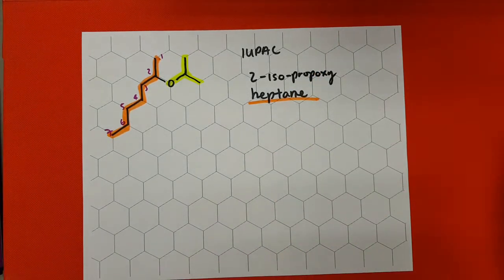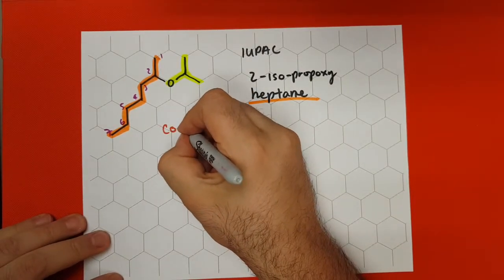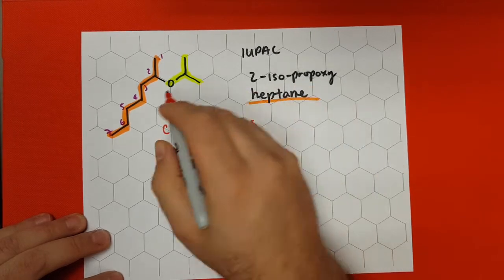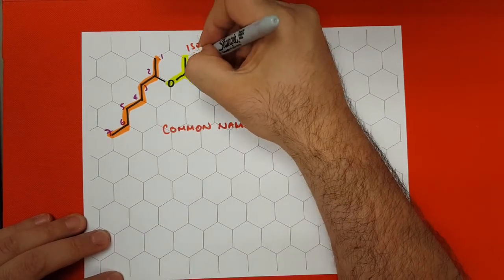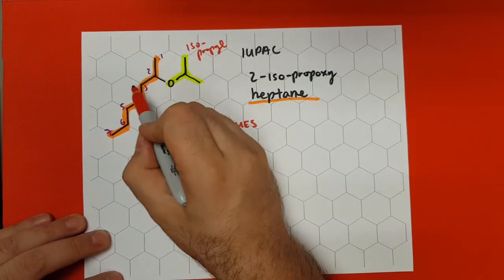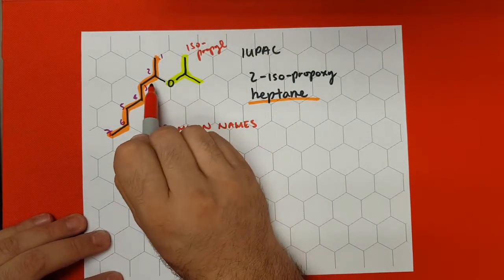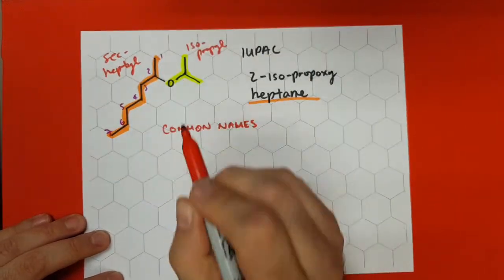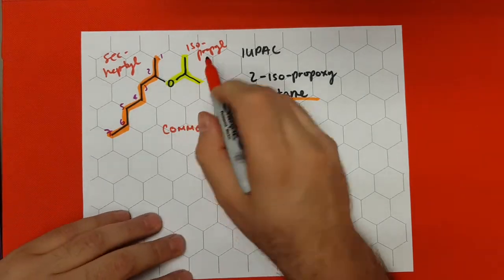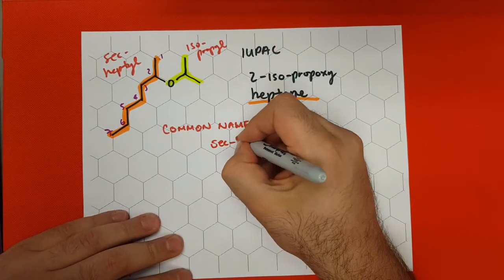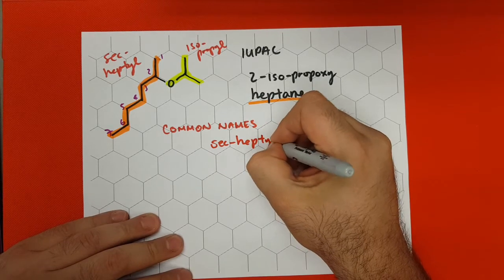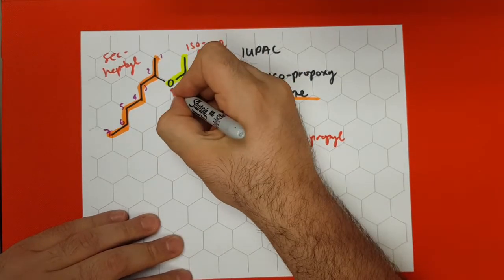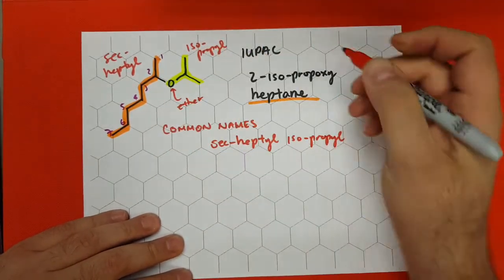Now, in the case that we're doing common nomenclature, remember, we have to identify what's on the left and on the right side of the oxygen atom. So here we have isopropyl. And on the other side, we have 1, 2, 3, 4, 5, 6, 7 attached to the secondary carbon — sec-heptyl. So using purely alphabetical order, heptyl comes before propyl. So this is going to be sec-heptyl isopropyl ether.